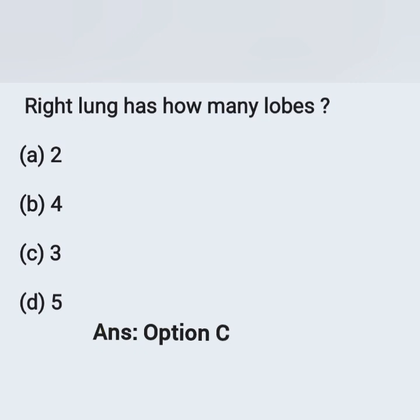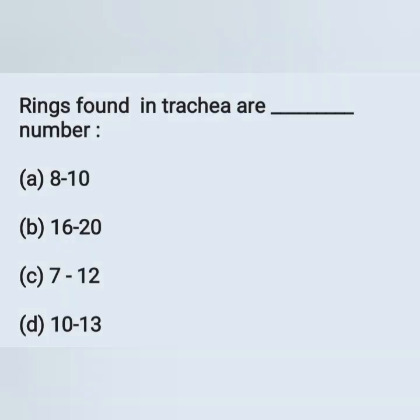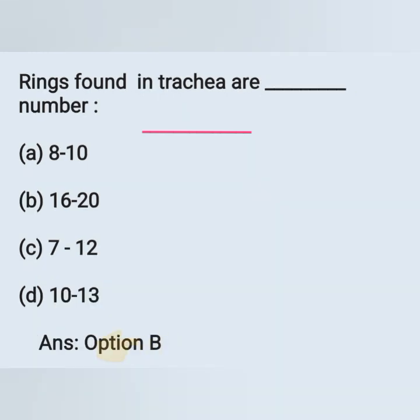Next question: rings found in the trachea are how many in number? Options: A) 8–10, B) 16–20, C) 7–12, D) 10–13. The number of rings present in the trachea is 16 to 20. These are C-shaped incomplete rings. The correct answer is option B.